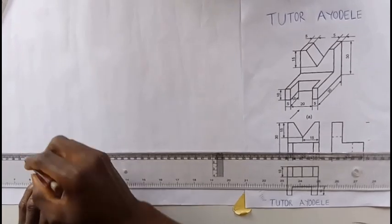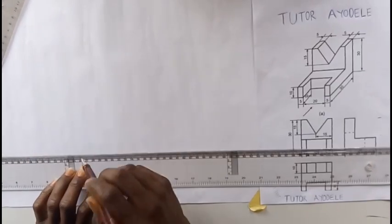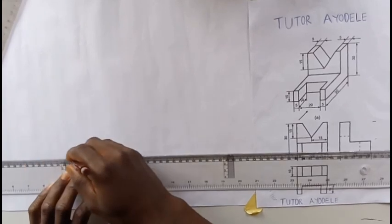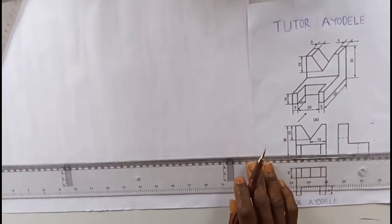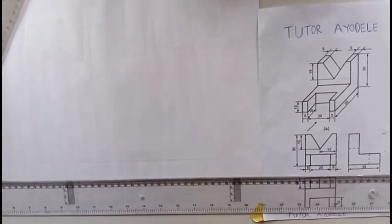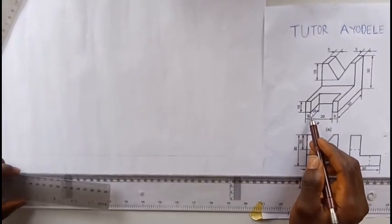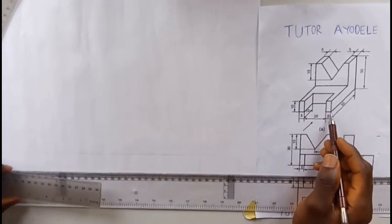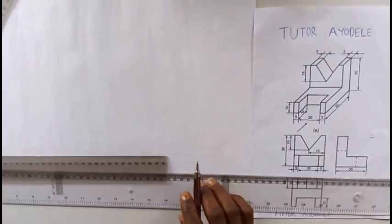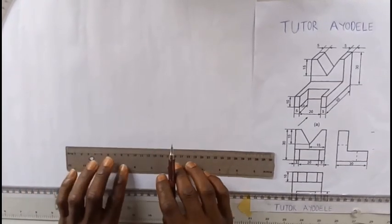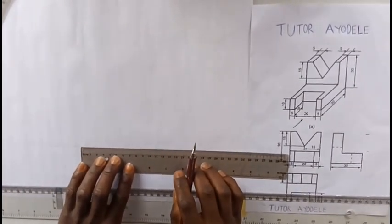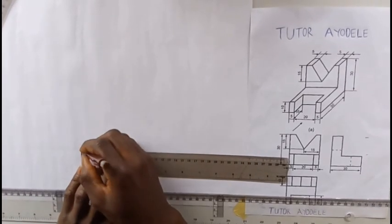We first rule a reference line. Now this is my reference line here. I take this measurement: 5, 20, and 5. So in the ratio 2 to 1, my 5 will be 10.